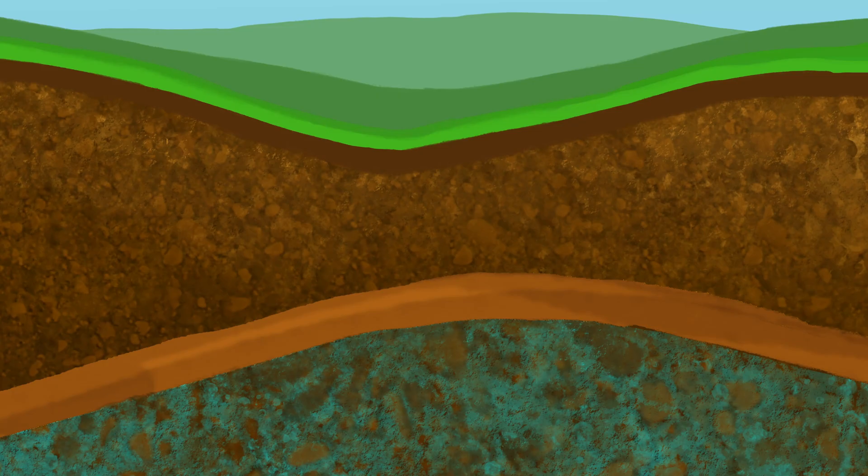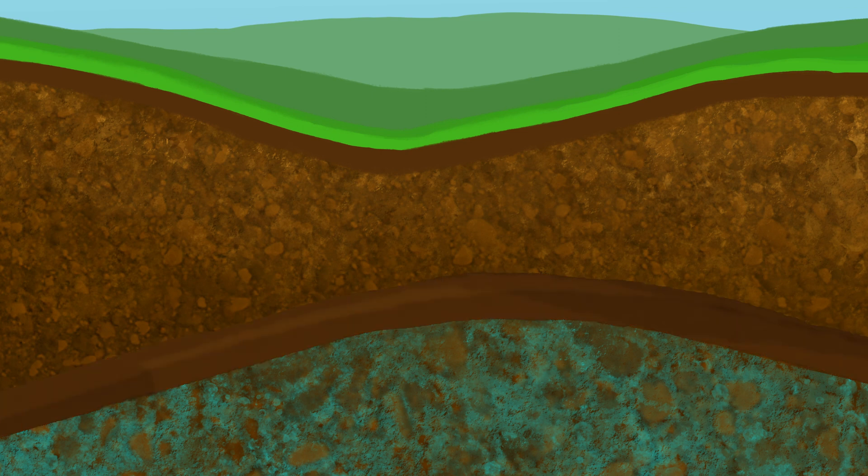A confining layer is a layer of clay or rock that water has a very hard time passing through. For example, this could be a layer of clay or shale.